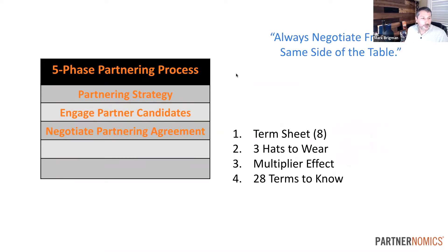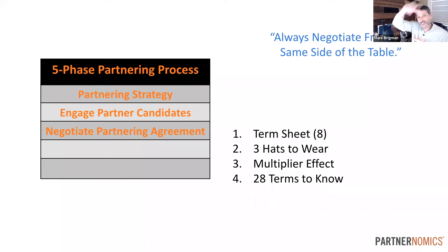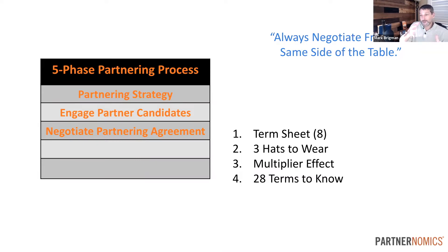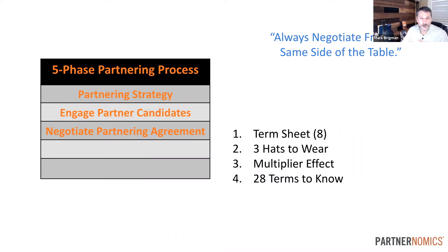Phase three is to negotiate or bargain — to put that agreement in place. My philosophy is to always negotiate from the same side of the table. So many times when we think about putting these partnering deals together, it's the dark room with the lamp swinging across — I just don't believe in that philosophy. I believe in being very transparent: here's what we're looking for, here's the value we can provide to you. Now it's me and you versus this market opportunity — not me versus you doing the zero-sum game — we're trying to create a competitive advantage and create significant value for both companies.